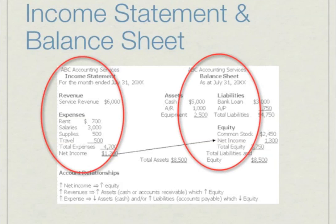At the bottom we have total liabilities and equity, which equals total assets, because owner's equity equals assets minus liabilities, which is the same as assets equals liabilities plus owner's equity. The net income was calculated in the income statement, and common stock is a corporation's basic class of stock. The accounting relationships section shows that when there is net income, equity increases; when there is revenue, assets increase and equity increases; and when there are expenses, assets decrease and equity decreases.